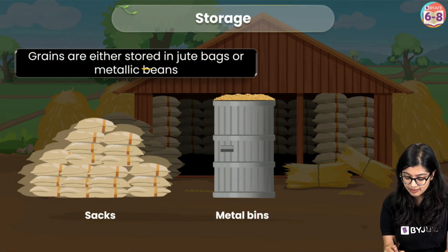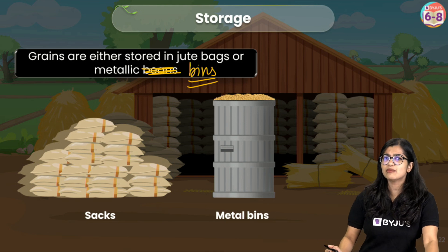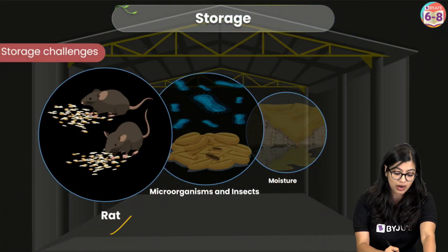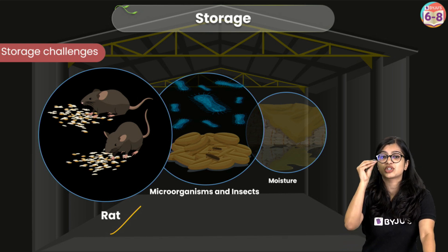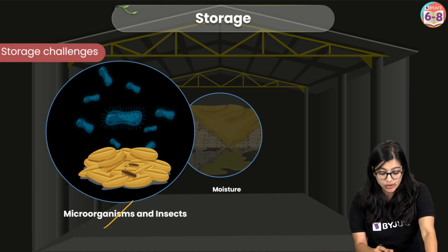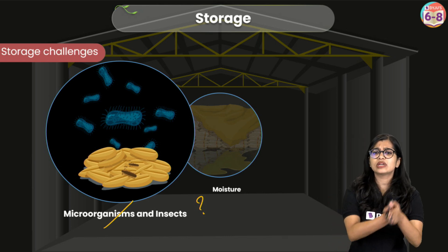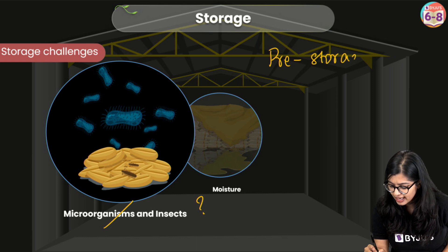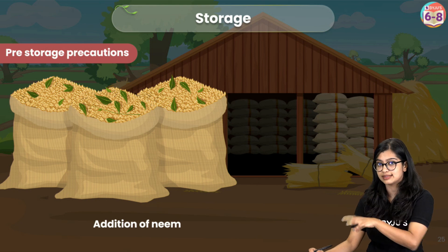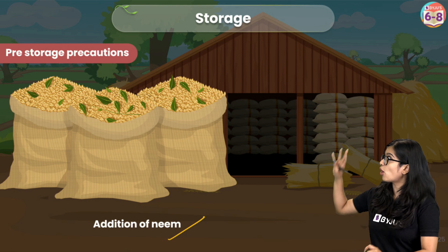Storing grains in sacks and metallic bins without proper precautions comes with disadvantages. Grains could be subject to attack by rats and small animals, and pests, insects, or microorganisms may start to grow on them. There are certain storage challenges to address with pre-storage precautions. To tackle the growth of microorganisms like bacteria or fungi, we add neem to the sacks along with the grains. Neem has strong antibacterial properties and prevents the growth of these microbes.